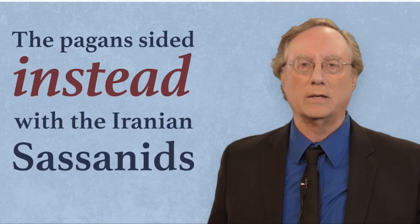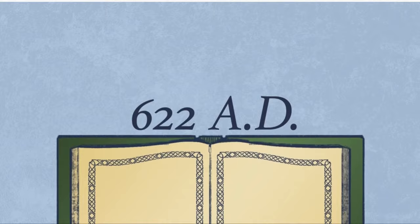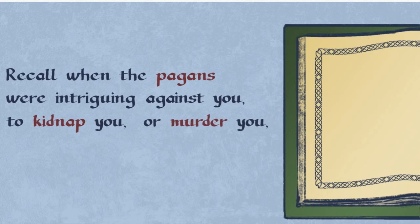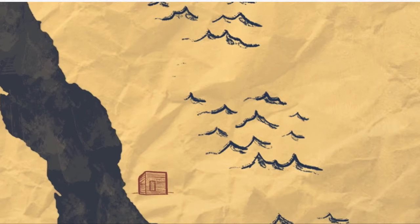The Quran tells Muhammad of the year 622: Recall when the pagans were intriguing against you to kidnap you, or murder you, or to expel you. Under pressure, the Prophet and his small community emigrated to the nearby city of Medina.